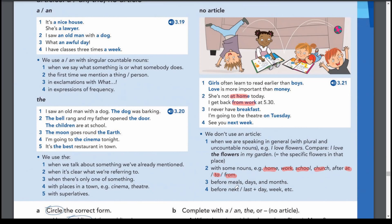Third: no article before meals, days, or months. For example: 'I never have breakfast,' 'I'm going to the theater on Tuesday,' 'on Monday,' 'on Sunday,' 'in January,' 'in February,' 'in August.' Fourth: no article with 'next' and 'last' — 'next week,' 'next month,' 'next year,' 'last month,' 'last year': 'See you next week,' 'I saw him last month,' 'He's coming next year.'